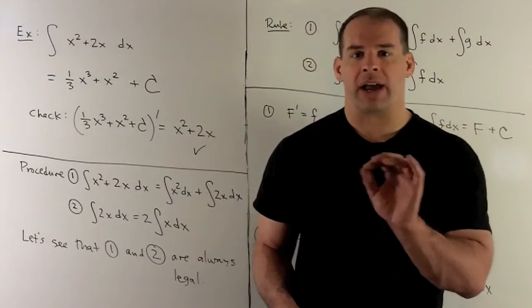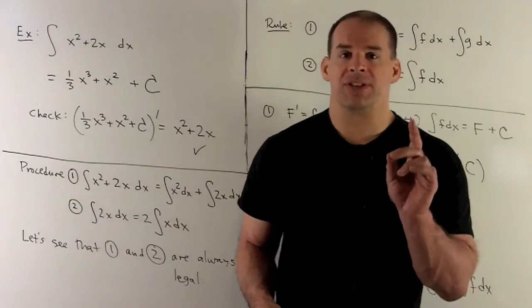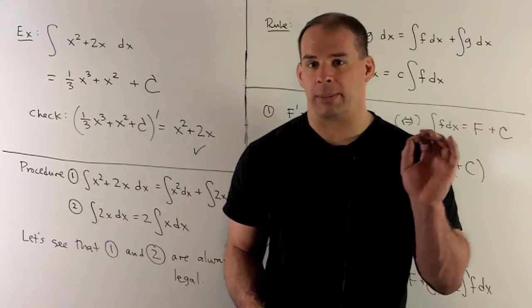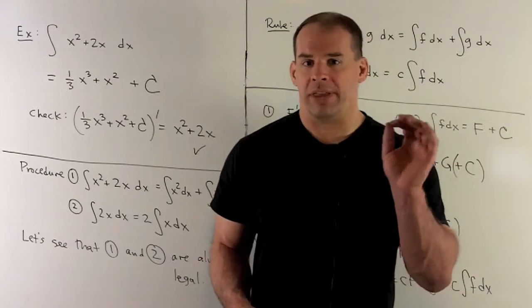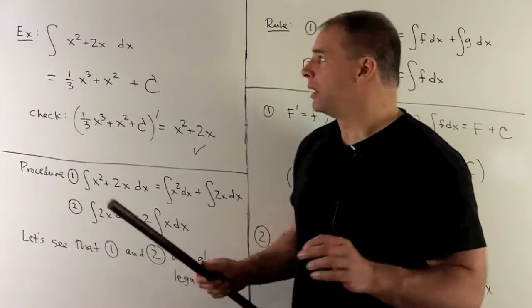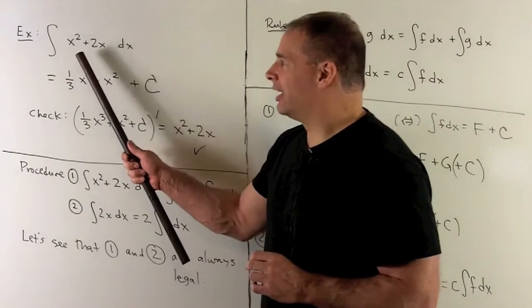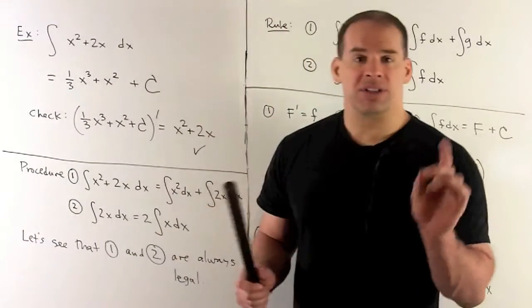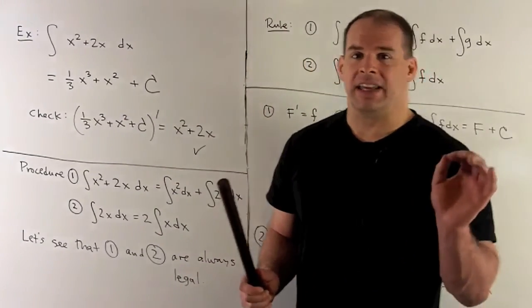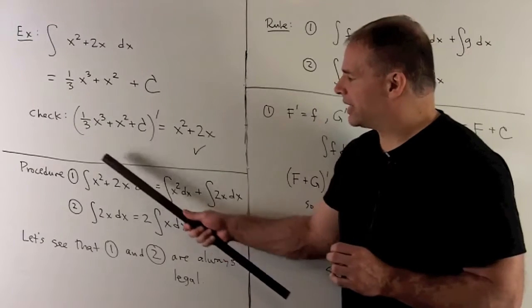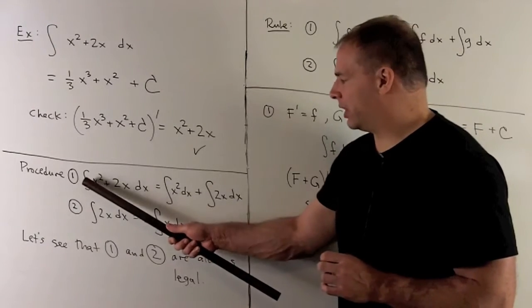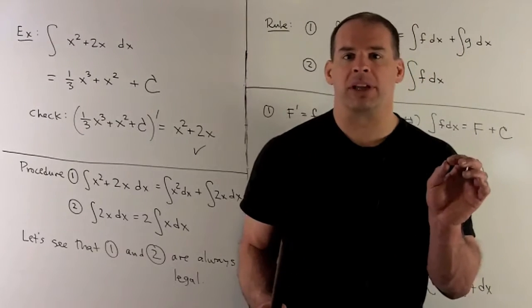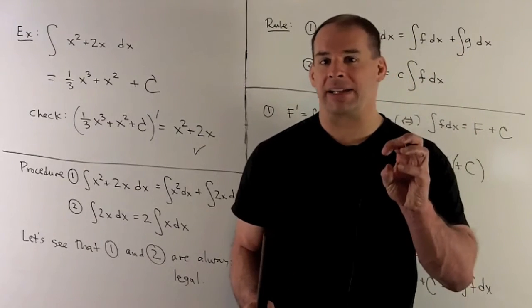One reason to work out this example: there are things done here that are fast and loose — we haven't shown them yet. One thing done without explaining: I went ahead and considered the indefinite integral of each term separately. The idea is we're going to be allowed to take a sum, take its indefinite integral, and break the sum apart — work out each part separately, then put them back together at the end.